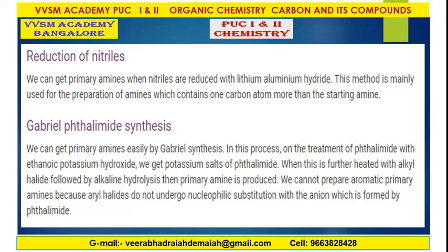Gabriel phthalimide synthesis is a special type of synthesis discovered by Gabriel. We can get primary amines easily by Gabriel synthesis. In this process, on treatment of phthalimide with ethanol and potassium hydroxide, we get potassium salts of phthalimide. This is then heated with alkyl halide, followed by alkaline hydrolysis, to produce primary amine.